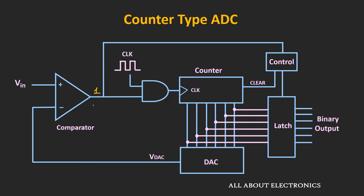The clock pulses are applied to this counter using the AND gate. So whenever the output of the comparator is high, these clock pulses will be applied to the counter. Due to that, the counter starts counting. As the counter increments its count, the output of the DAC will also increase in the staircase fashion. The output of the DAC is continuously compared with the input voltage. As long as VDAC is less than the input voltage, the output of the comparator will be high, so the clock pulses will be applied to the counter and the output of the DAC will increase gradually in the staircase fashion.